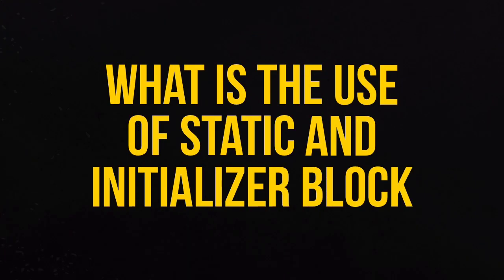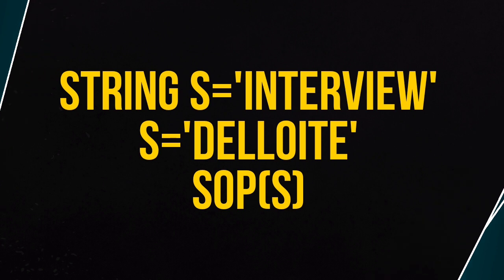First question: what is a static block and initialization block in Java? A static block is executed once when the class is loaded into Java memory. It executes before the main method, and it doesn't matter whether you write it before or after the main method. An initialization block initializes before constructors are invoked. So the order is: static block executes first, then initialization block, then constructor.